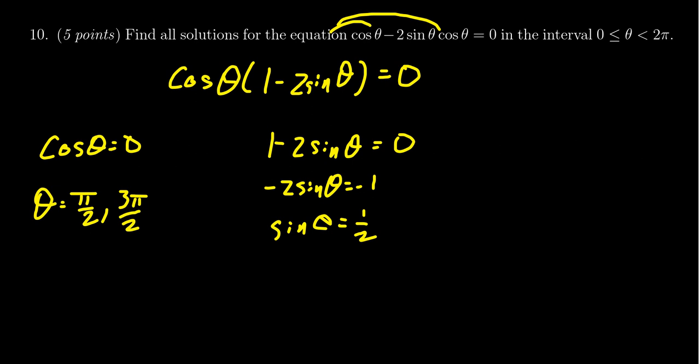When does sine equal 1/2? That happens in the first quadrant and in the second quadrant. In the first quadrant, that's at π/6. In the second quadrant, that's at the angle which references π/6, which is π - π/6. In other words, 5π/6.